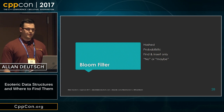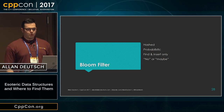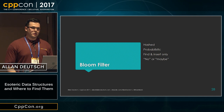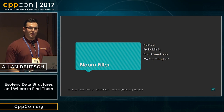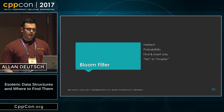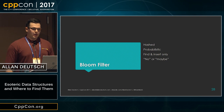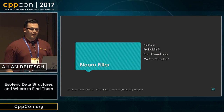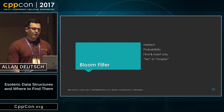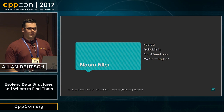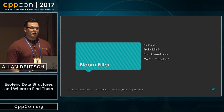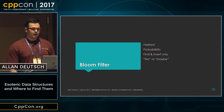The probabilistic part is that sometimes it'll say an element is in the set when it really isn't. But it doesn't actually contain any of the elements — it's just a bunch of bits. So it only supports find and insert operations; you can't remove things from it. The only options from a find are that it's definitely not there, or if it says it is there, it could be incorrect and the data's actually not — that's where the probabilistic part comes in.